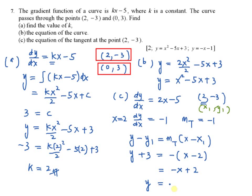y equal to negative x, 2 minus 3, you have minus 1. So y equal to negative x minus 1 is the equation of tangent.